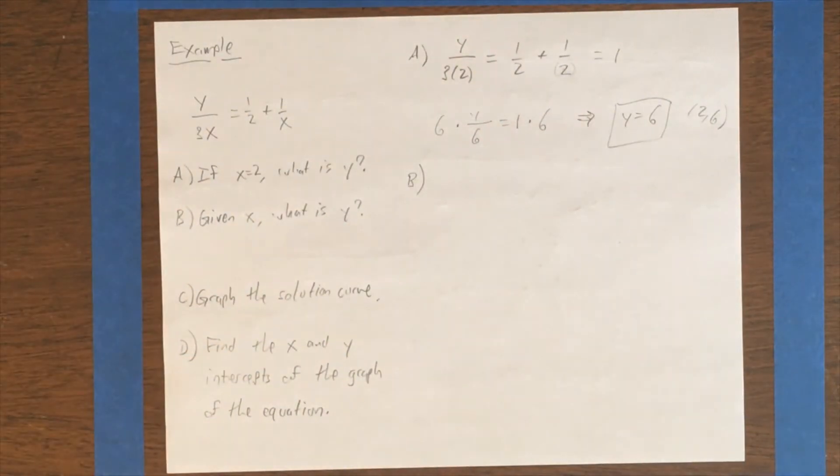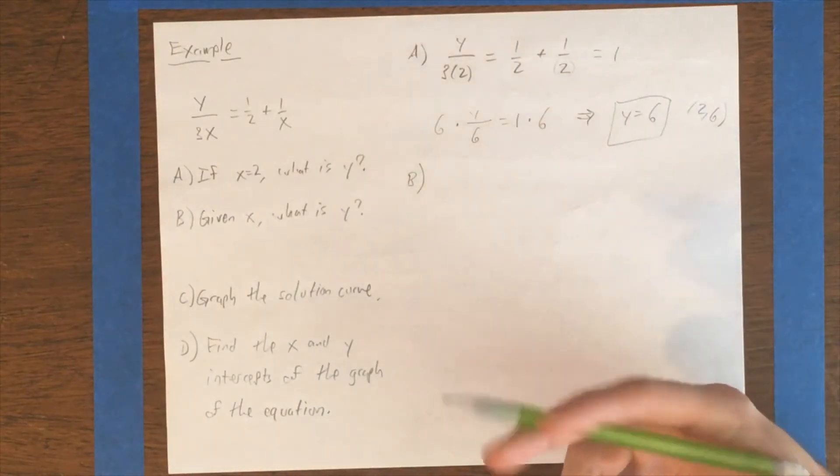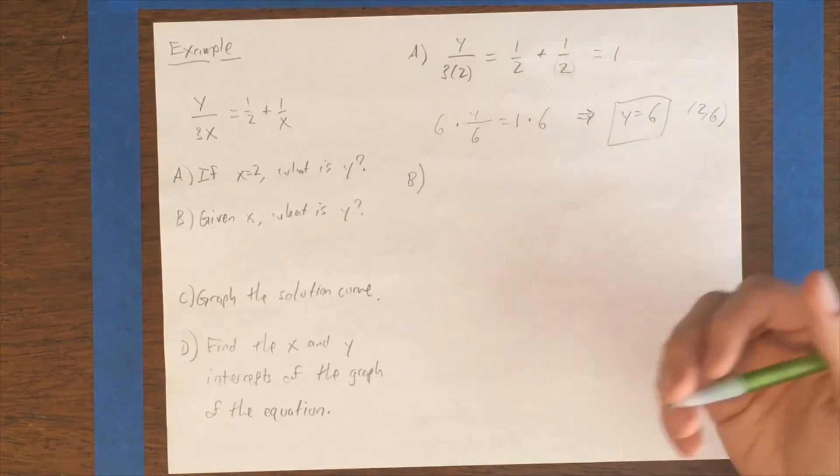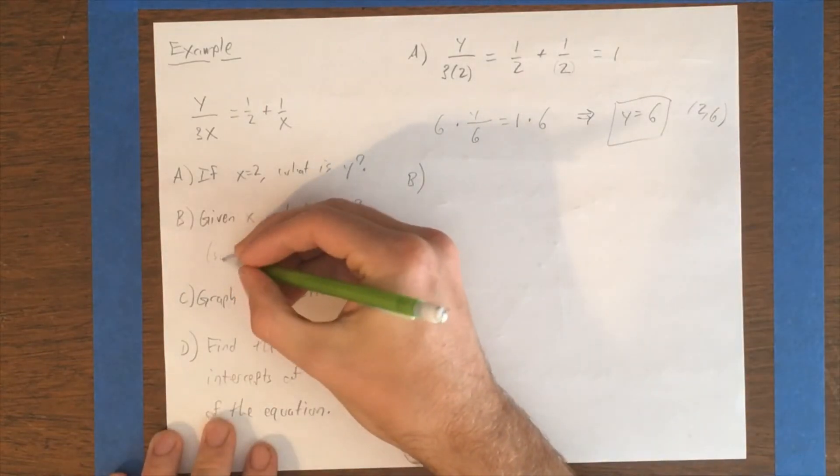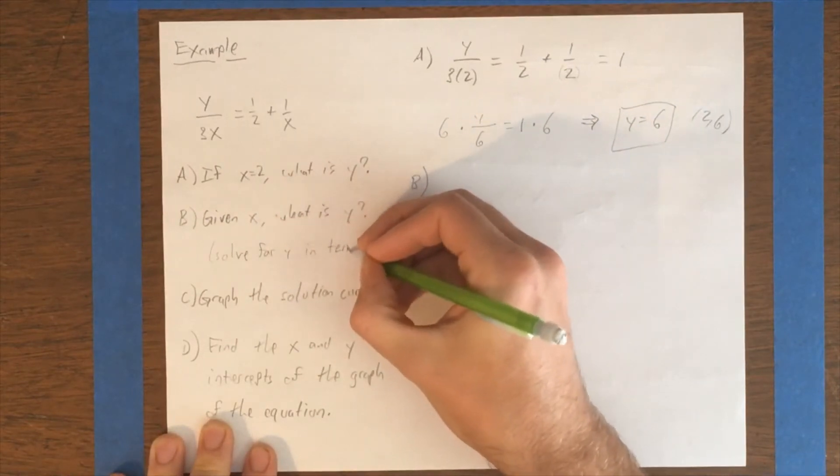All right. B, given x, what is y? Well, that's a weird question because you didn't tell me what x was. Yeah, that's sort of the point. Here what we're asking is, if I give you an x, what will the y be? Come up with a rule that will tell me that. What we did last time was we substituted in a value and then we solved for y. We don't have a value to substitute in, but we can still solve for y. So what this means really is just solve for y in terms of x.